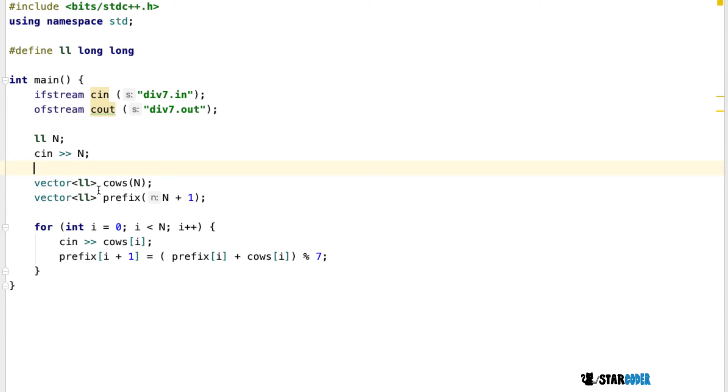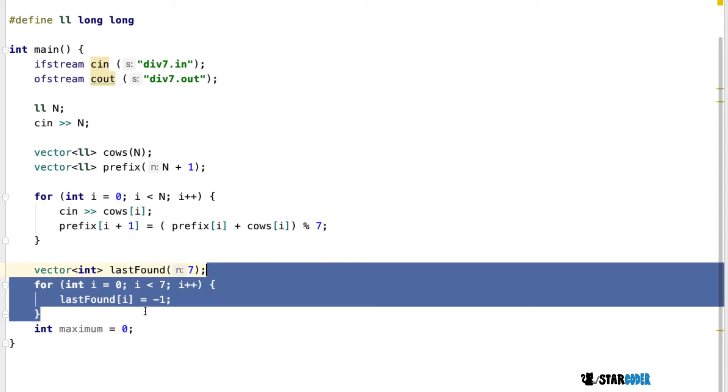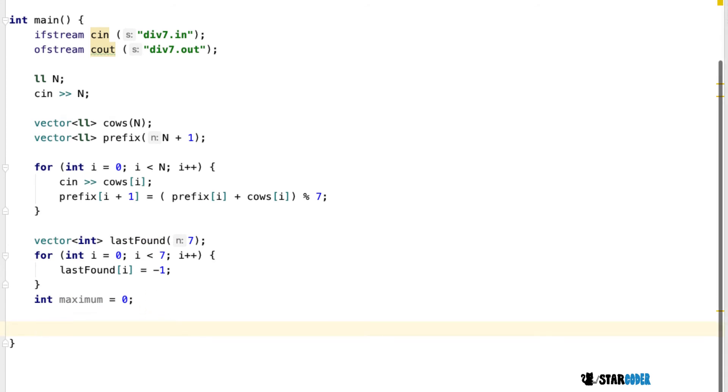And so we have two vectors here, our cows and the prefix sum. Our prefix sum is just going to be the value of itself mod 7. So it's just the sum mod 7. And after we finish the prefix sum, we're just going to create our last found. And so our last found is just going to basically contain the first instance of every value mod 7. So it's just going to have size 7. We're just going to initialize every value to negative 1. And we're going to create our answer or maximum, which is going to be 0.